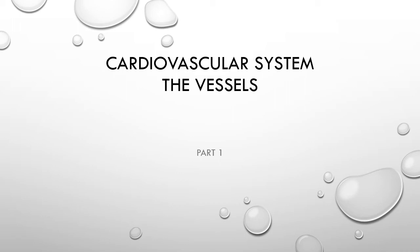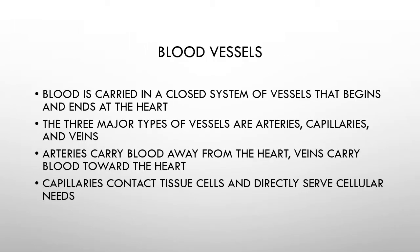I'll continue our look at the cardiovascular system with a look at the blood vessels through which we distribute blood throughout the body. The cardiovascular system is essentially a closed system - we have the heart and the blood vessels. Arteries leave the heart, then we move into capillaries where we distribute and pick up substances to and from the tissues, and then veins bring blood back towards the heart, where it then moves through the lungs to exchange gases.